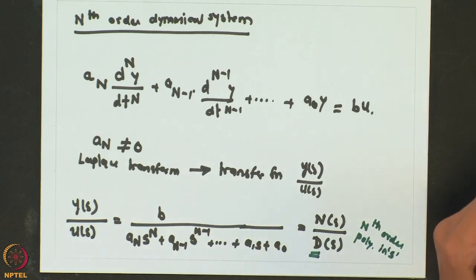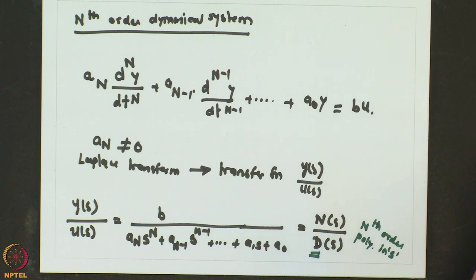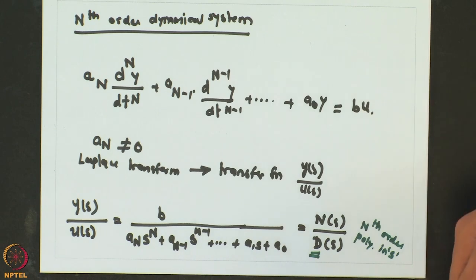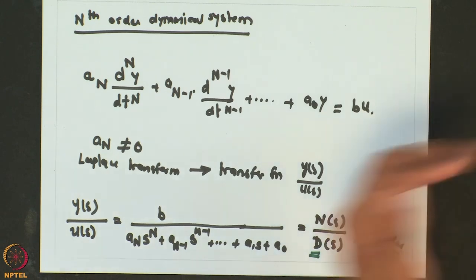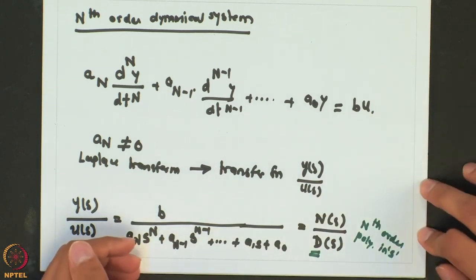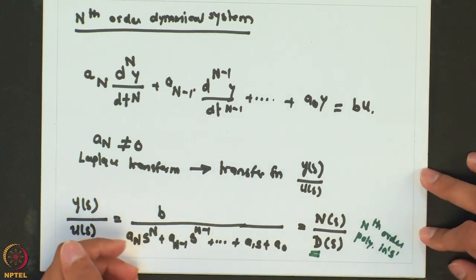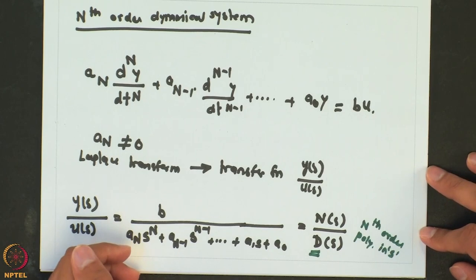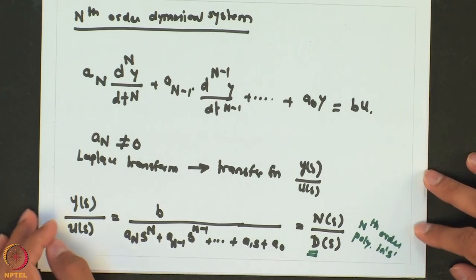When we talked about a second order dynamical system, the denominator was an s-squared polynomial. For a first order system it was just τs + 1, so only first order in s. Similarly, if it is s raised to the power n, it will be an nth order system.